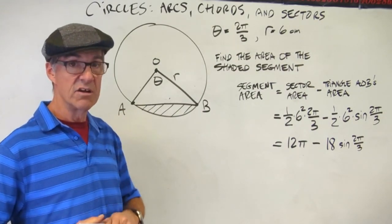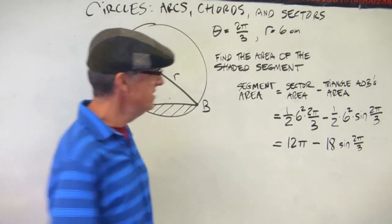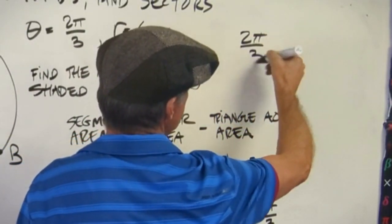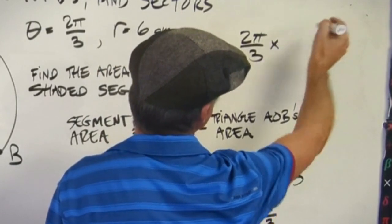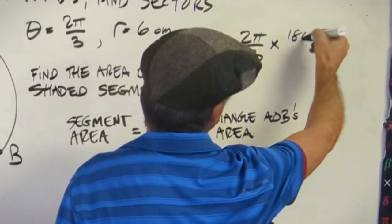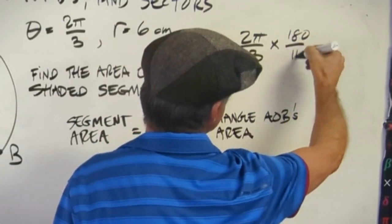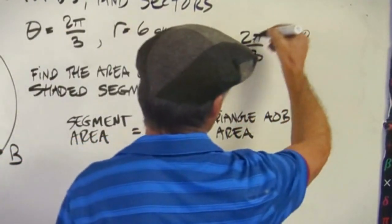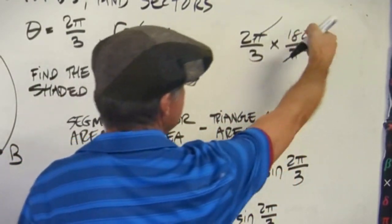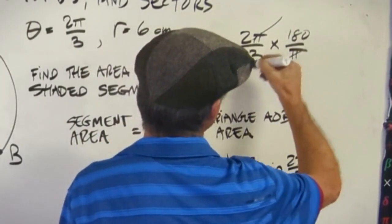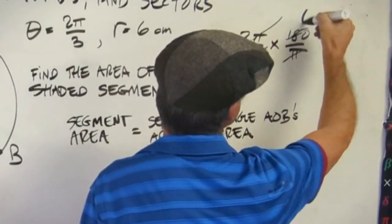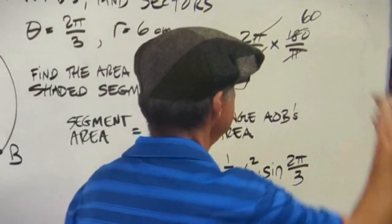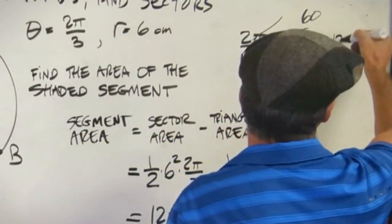The other option is you could just convert 2π over 3 radians into degrees and then leave your calculator in degrees and go that route. So I'm just going to show you that one. Remember, to get degrees: 2π over 3 times 180 over π. That's how we go from radians to degrees. Now I can cancel my π's out. My 3 into 180 goes to 1 and 60. So now I pretty much just have 2 times 60. So this is 120 degrees.